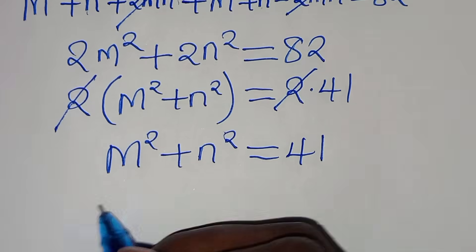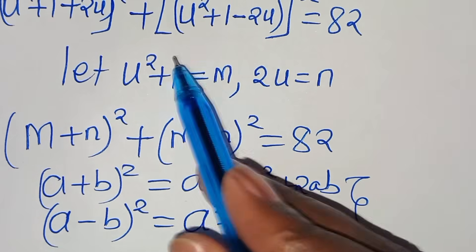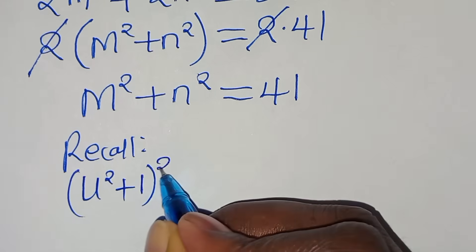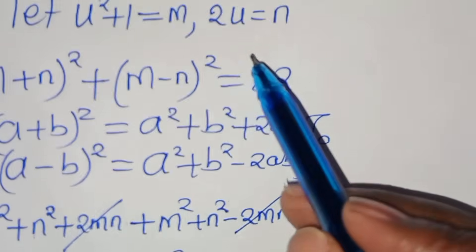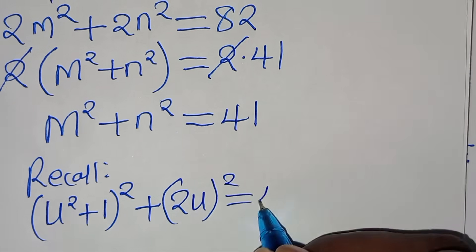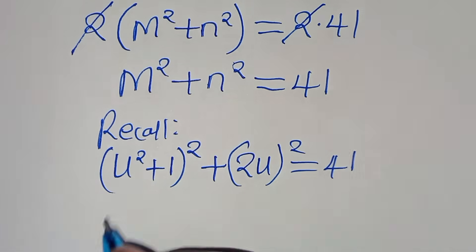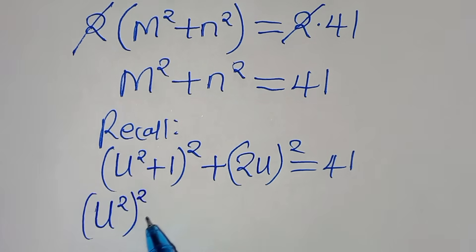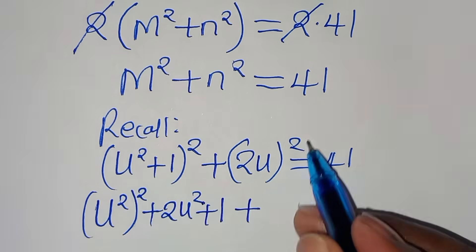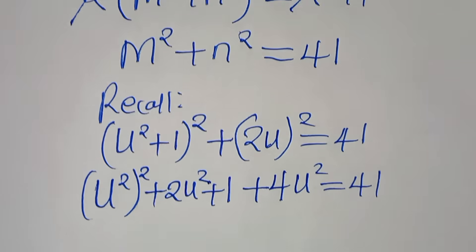Recalling that m = u² + 1 and n = 2u, we substitute back: (u² + 1)² + (2u)² = 41. Expanding (u² + 1)² gives u⁴ + 2u² + 1, and (2u)² gives 4u². So we have u⁴ + 2u² + 1 + 4u² = 41.